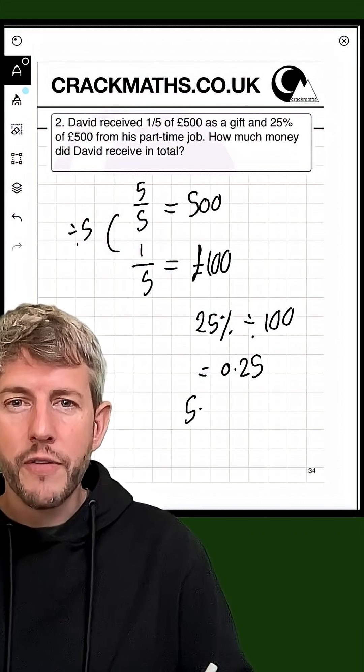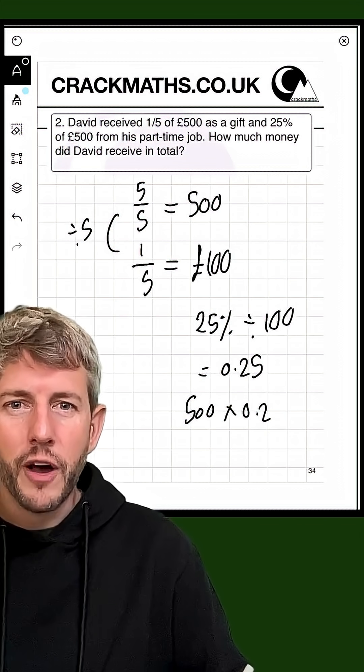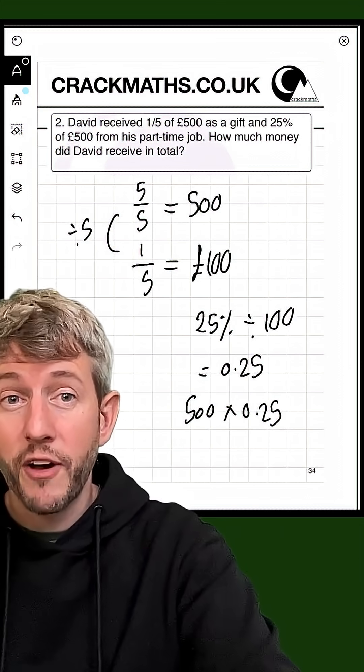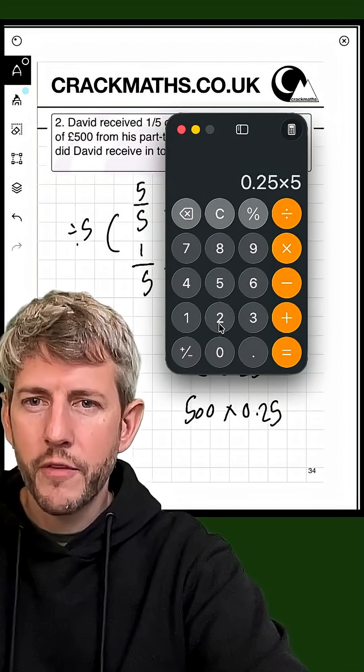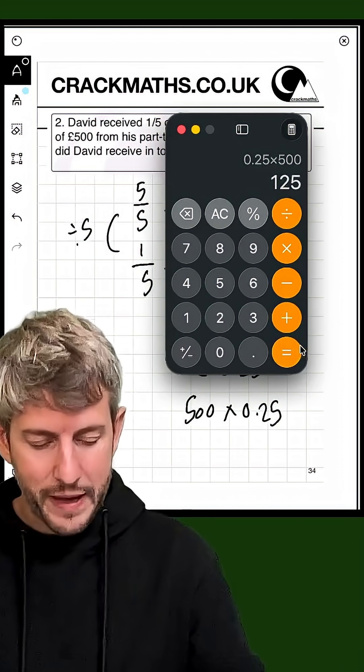So if I do 500 times 0.25, this will give me 25% of 500. So let's bring this up. 0.25 multiplied by 500 equals 125 pounds.